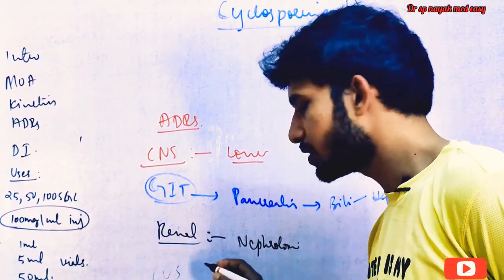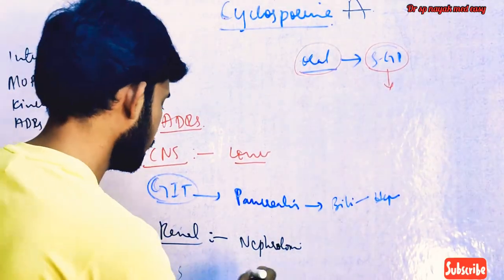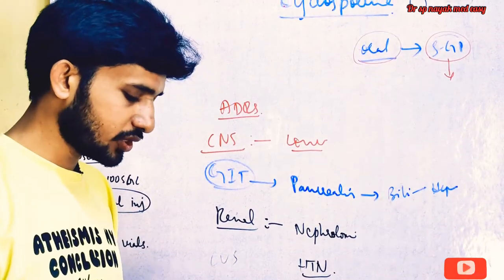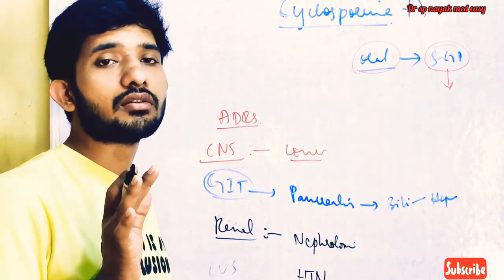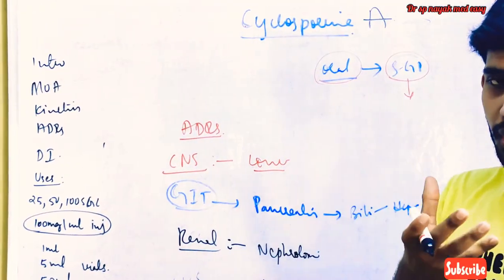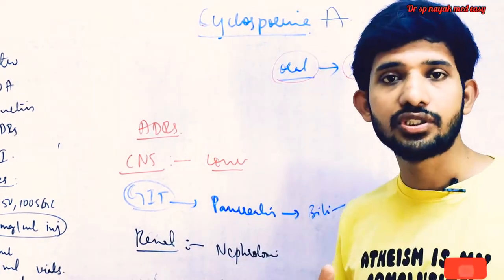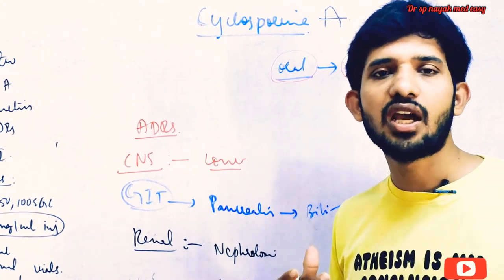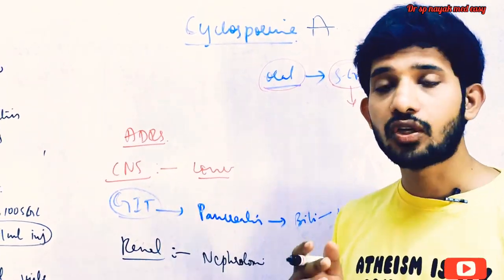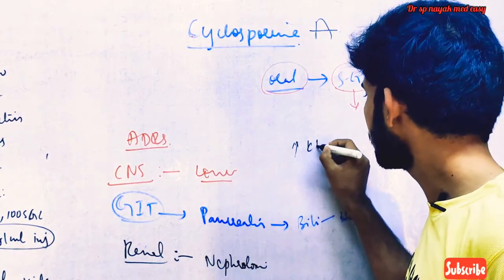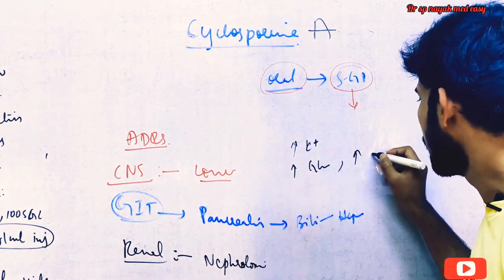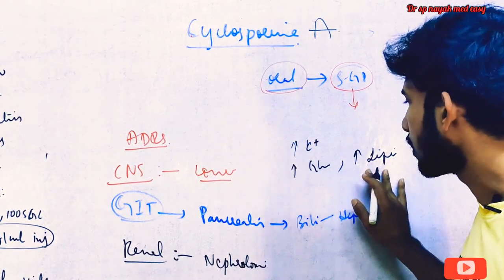In the cardiovascular system, cyclosporine causes hypertension. Other ADRs include hypertrichosis — a condition where patients have severe growth of hair — and gingival hyperplasia, where gingival tissues increase in size. Cyclosporine also causes myopathy. It can cause hyperkalemia (increased potassium levels), hyperglycemia (increased glucose levels), and increased lipoprotein or lipid values (lipidemia).